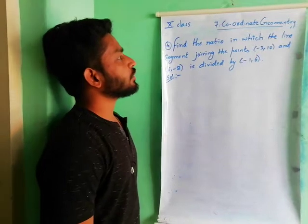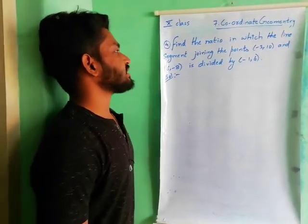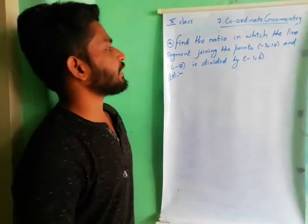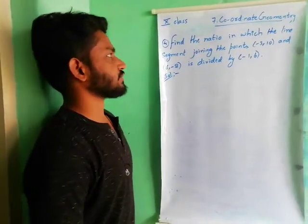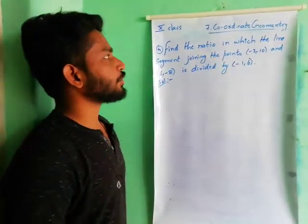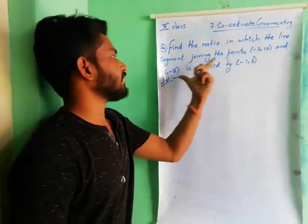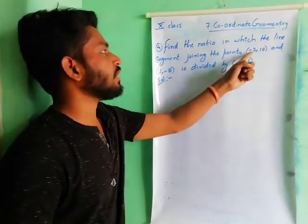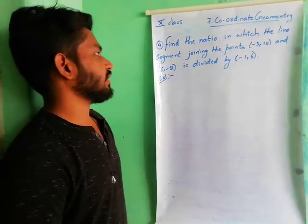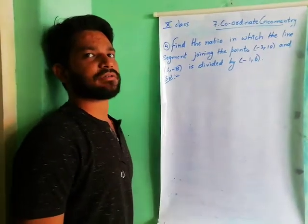Coming to the fourth problem: find the ratio in which the line segment joining the points (-3, 10) and (6, -8) is divided by the point (-1, 6). So in this question, we have to find out the ratio in which the line segment joining those points is divided by that point.